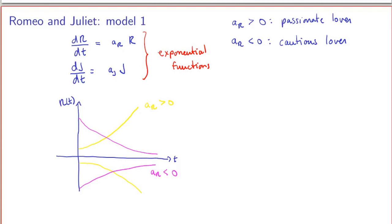This is a fairly boring model because the equations are decoupled — it's like Romeo and Juliet don't talk to each other. Both equations are independent: Romeo's love evolves without any influence from Juliet's love, and vice versa. That's a pretty boring couple, so let's try to make the model a little more interesting.